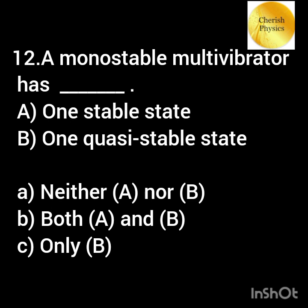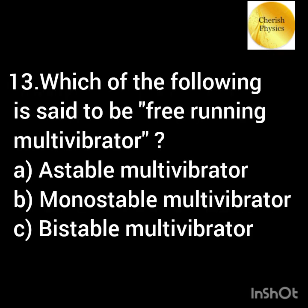A monostable multivibrator has: a) one stable state, b) one quasi-stable state. Which of the following multivibrator is said to be a free-running multivibrator?